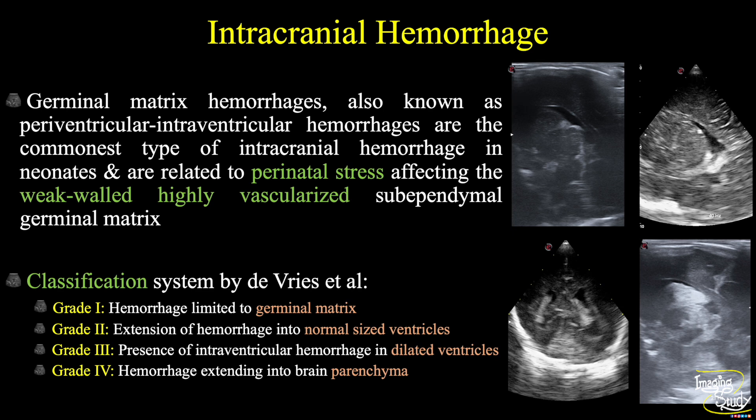We have a classification system for intracranial hemorrhage containing 4 grades, the last one being the worst. In grade 1, you will get hemorrhage at the germinal matrix, chordothalamic groove or subependymal region. In grade 2, the hemorrhage will extend into the ventricle but ventricular size should be normal. In grade 3, there will be intraventricular hemorrhage with dilated ventricles. And in grade 4, the hemorrhage extends to the brain parenchyma.